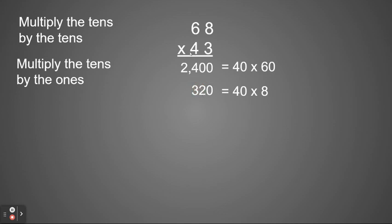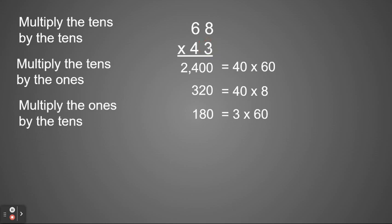Now we're done with this 4 in the tens place. So now we're going to use the ones place. We're going to multiply the ones place times the tens place up top. So we have 3 times 60. 3 times 6 is 18. So 3 times 60 is 180.